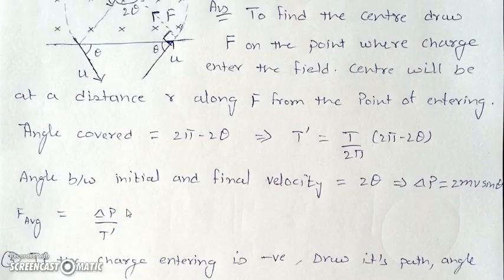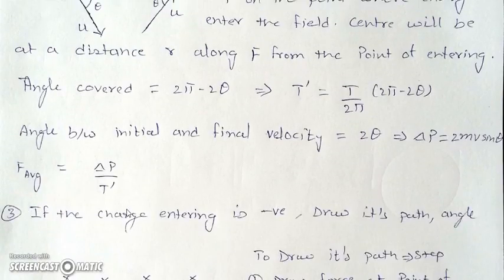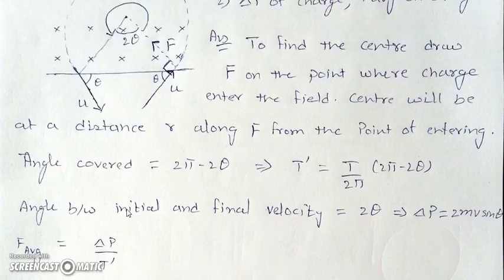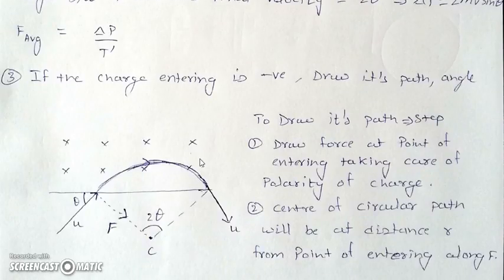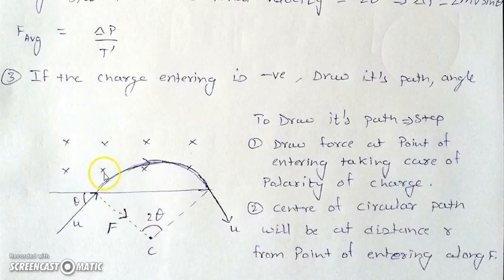In the next part, if the entering charge is negative instead of positive, we consider how the solution changes. If the charge is negative, we still draw the force on the charge using V×B. The magnetic field is in the same direction, and V×B gives a force in a certain direction, but since the charge is negative, the actual force will be in the opposite direction: −(V×B).